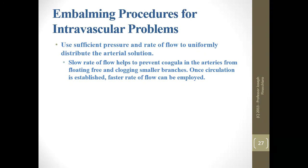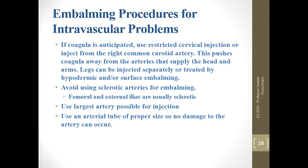Use sufficient pressure and rate of flow to uniformly distribute arterial solution. A slow rate of flow helps prevent coagula from floating free and clogging smaller branches; once circulation is established you can increase the rate of flow. If you anticipate clots, use restricted cervical injection from the right common carotid to isolate the head and push coagula away from the arteries supplying the head. Legs can be injected separately and treated by hypodermic or surface embalming. Avoid using sclerotic arteries if at all possible, and generally the femoral and external iliac are the sclerotic ones.